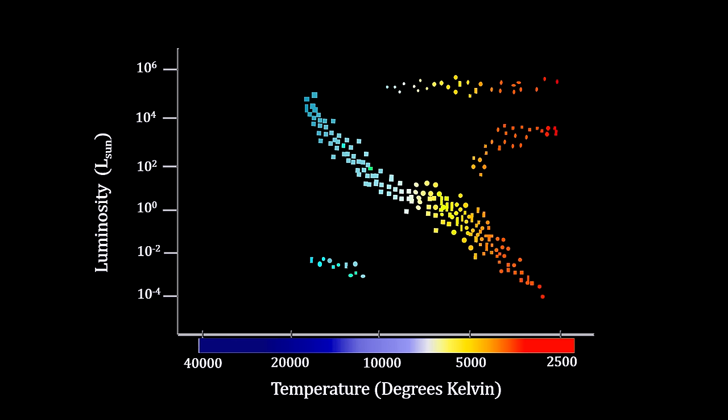Here we see that most stars fall on a diagonal line from the upper left — hot, blue, luminous stars — down to the lower right — cooler, dimmer, red stars. But there is also a grouping of stars well below the main line and two groupings well above it. This is the Hertzsprung-Russell Diagram, or HR Diagram for short. It is one of the most important tools in understanding stars ever devised. It tells us a great deal about the life, death, and age of stars, and more importantly for our purposes, it can tell us how far away stars are.